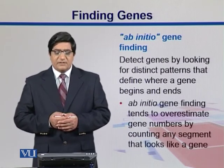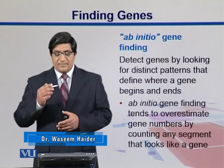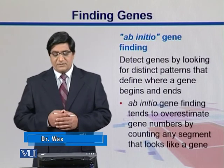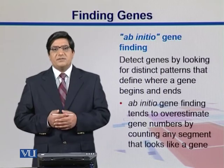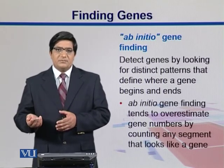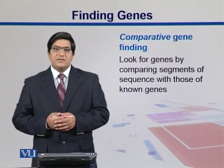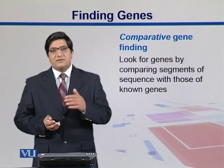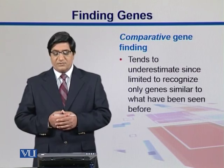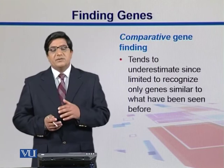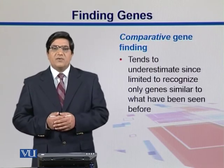In ab initio approaches, we detect genes by looking for distinct patterns that help us define a gene. These ab initio approaches tend to overestimate the gene numbers — any segment that looks like those patterns might be called a gene, but that may not be true. Comparative approaches look for genes by comparing segments with known gene sequences, but this has an issue of underestimating the genes since it is limited to recognizing genes by comparing to known sequences only, making it hard to find what is novel or new.